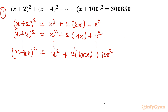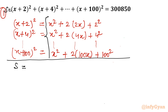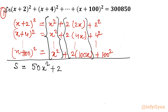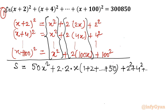Now I will add all the terms. The left-hand side is the sum S. How many times is x² written? The terms go 2, 4, 6, 8, ... 100, so there are 50 terms, giving 50x². For the middle terms, taking 2 outside the bracket gives 2x times (1 + 2 + ... + 50). The constant terms are 2² + 4² + ... + 100².